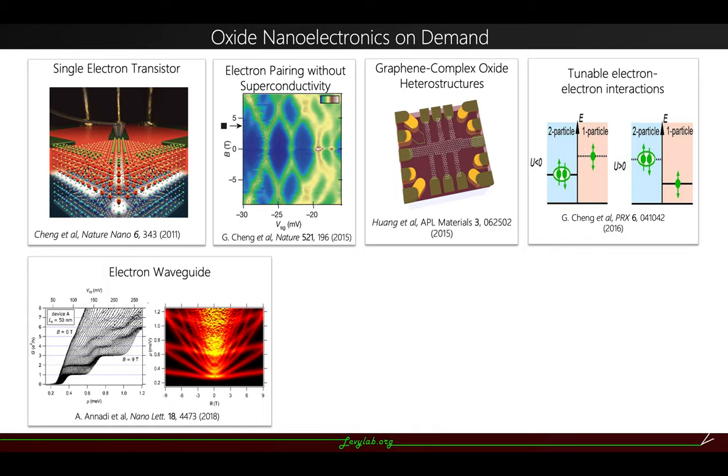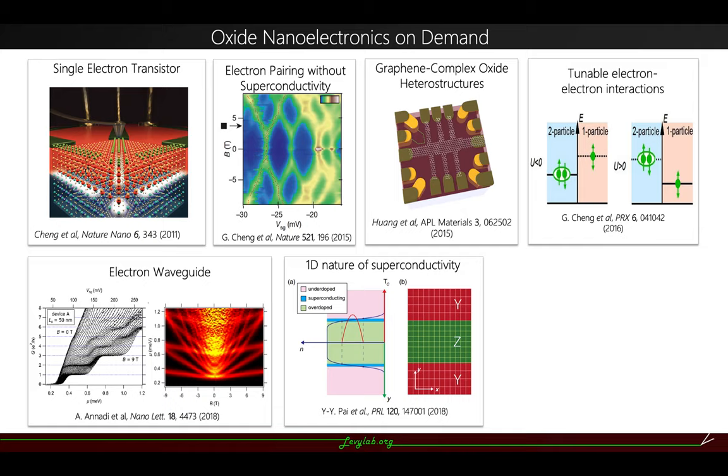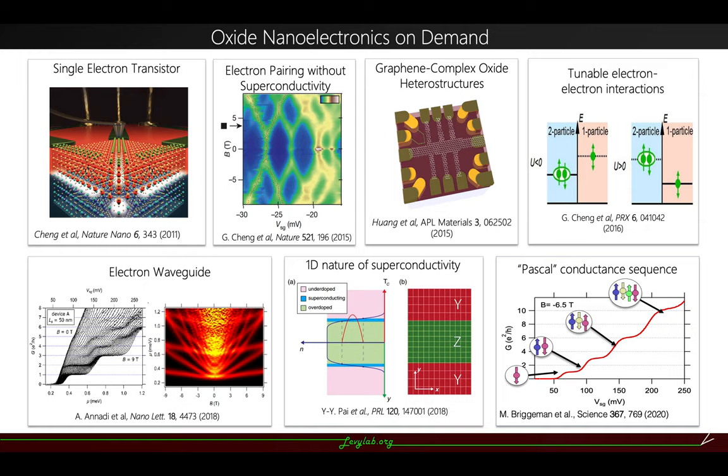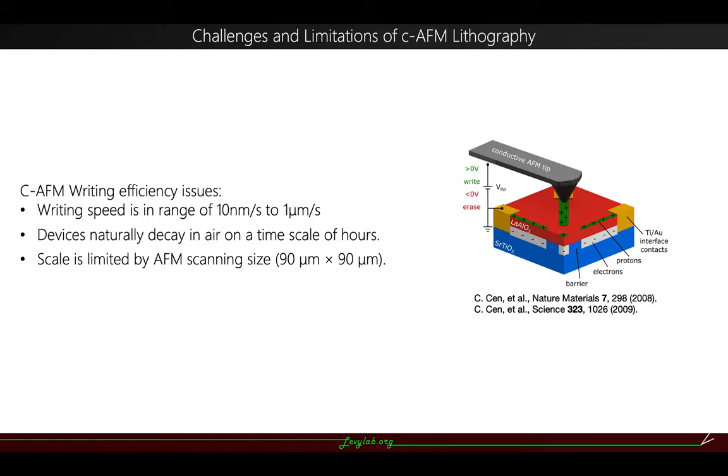We have ballistic nanowires, electron waveguides, and we observe the 1D nature of superconductivity at the LAO-STO interface. And most recently, we observe the fractional conductance sequence at the interface. So all these are very good results from our group.